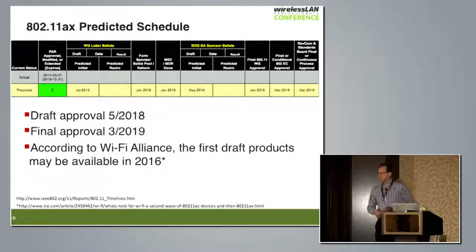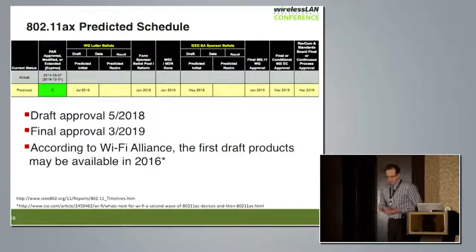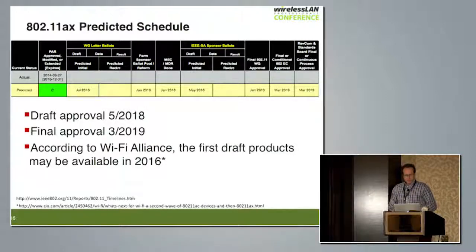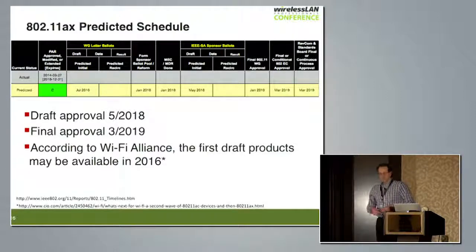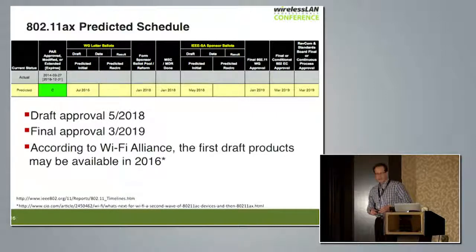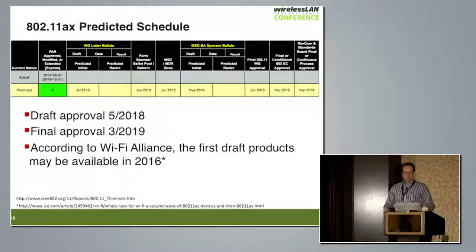Regarding the schedule for AX: work is ongoing with regular meetings, the draft is expected to be approved in May 2018, and final approval is expected in March 2019. The Wi-Fi Alliance has indicated that some draft products may be available as early as 2016, but that remains to be seen based on publicly available information.